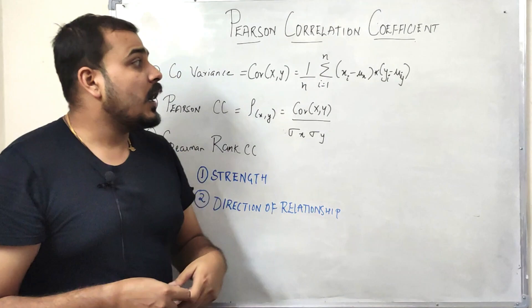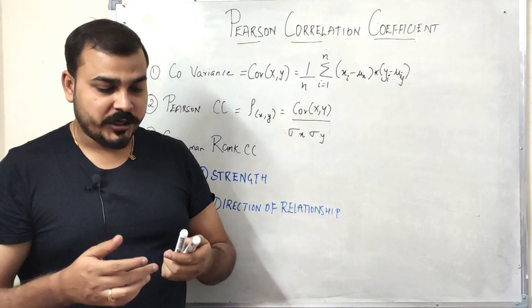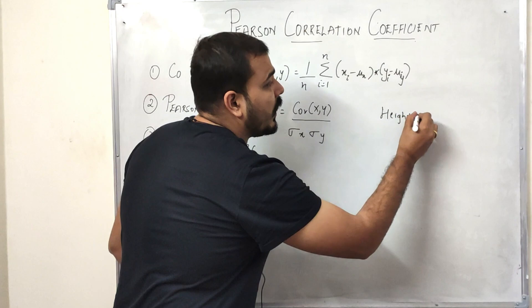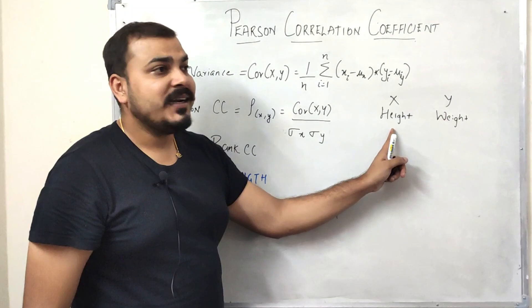First of all, let's revise why these terms are used — covariance, Pearson correlation coefficient, and Spearman rank correlation coefficient. Let's take an example where I have a dataset with an independent feature like height, and another dependent feature. I'm considering these as X and Y — height and weight parameters collected for various people.